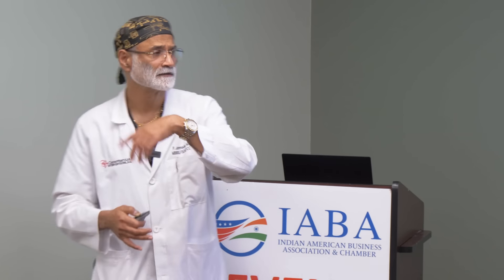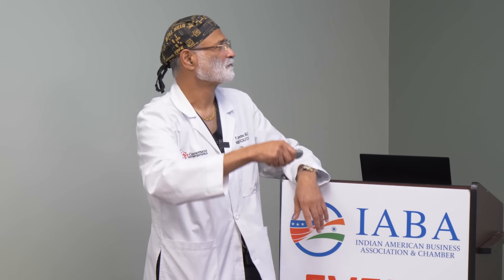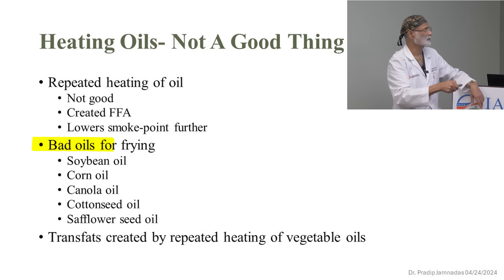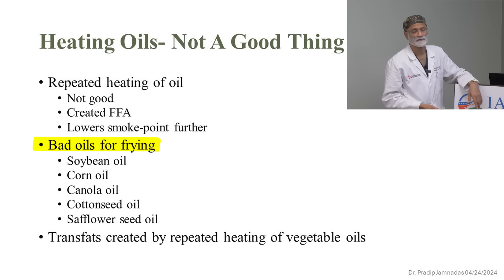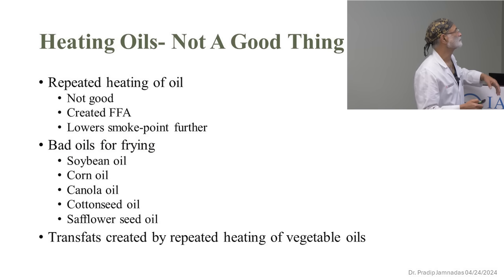Once you've heated that oil, the next time you heat it the smoke point is lower — and the next time even lower. You cannot keep reusing that oil. Bad oils for frying: soybean, corn, canola. So what are you going to use? Ghee — ghee is the best. You can also use coconut oil or some avocado oil. Let's look at the smoke points: butter 150°C, coconut 150°C, peanut 150°C, lard 190°C, olive oil 200°C, ghee 250°C, avocado very high. Ghee won't break down at cooking temperatures.